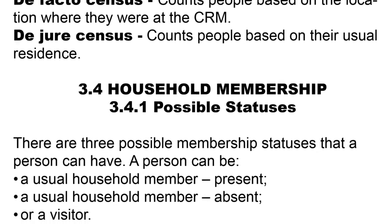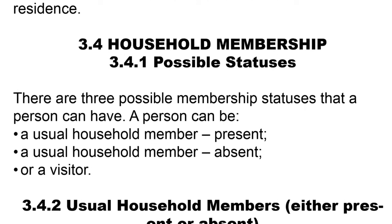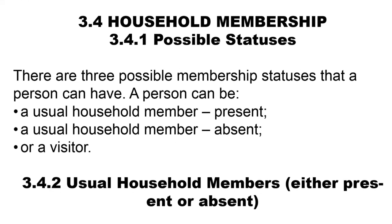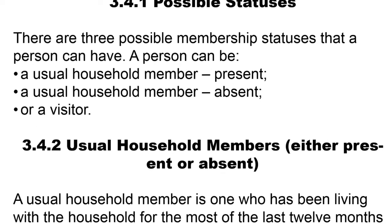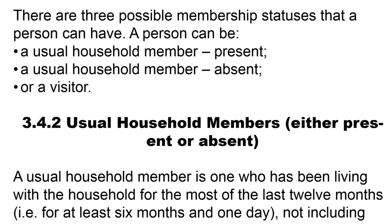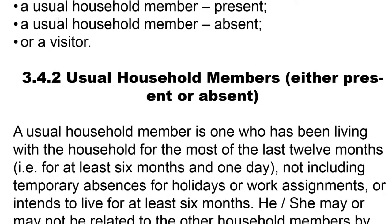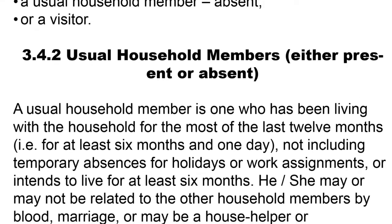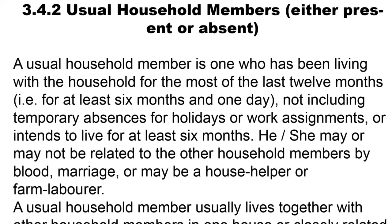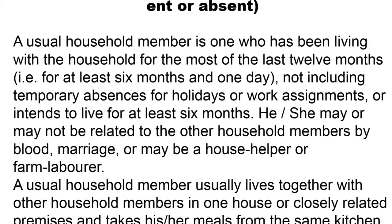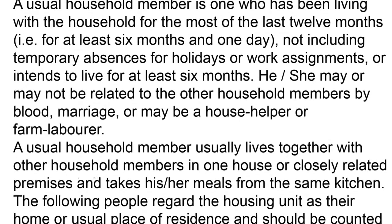Household membership: there are three possible membership statuses that a person can have. A person can be a usual household member present, a usual household member absent, or a visitor. A usual household member is one who has been living with the household for most of the last 12 months — that is, for at least six months and one day — not including temporary absences for holidays or work assignments, or who intends to live there for at least six months.